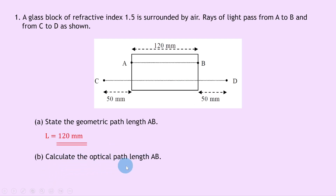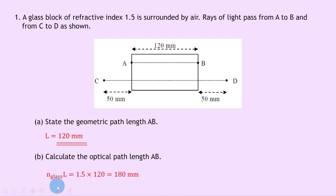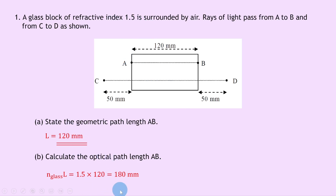Part B says to calculate the optical path length AB. The optical path length equals the refractive index of the denser material times the geometric path length. So we write optical path length = N_glass × L. With the refractive index of glass being 1.5, we have 1.5 × 120, giving an answer of 180 millimeters.